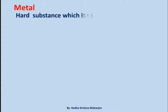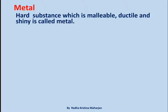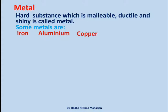A hard substance which is malleable, ductile, and shiny is called a metal. Some examples of metals are Iron, Aluminium, Copper, Silver, and Gold.